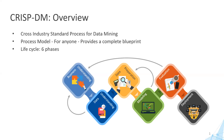There are six different phases in CRISP-DM methodology, beginning with business understanding. Phase two involves data understanding. Phase three involves data preparation. Then we move on to phase four which involves modeling. Phase five involves evaluation of the model that you have built, and finally you end the data science project by deploying the model in a production environment.